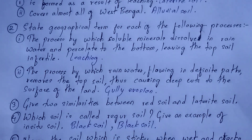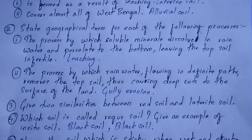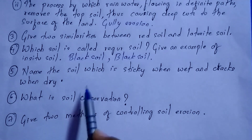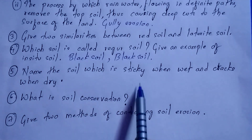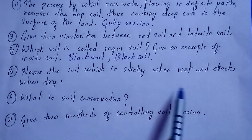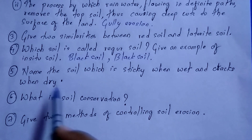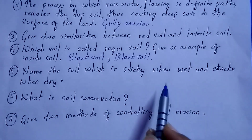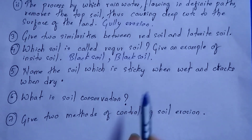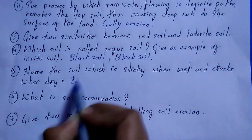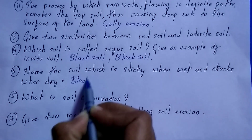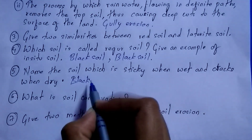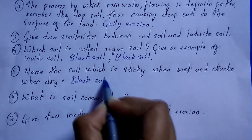Question number five: name the soil which is sticky when wet and cracks when dry. This is also easy — it is black soil. Black soil is sticky when wet and it forms deep cracks when it dries.